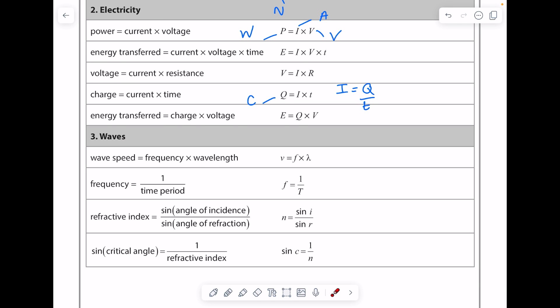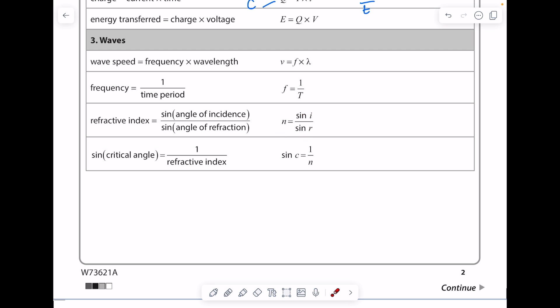Notice things like refractive index have no unit because they cancel out. Look, you have your sine angle of incidence divided by your sine angle of refraction.